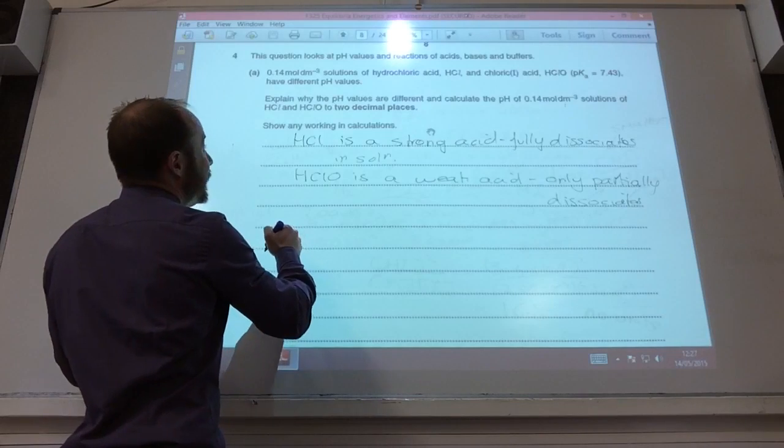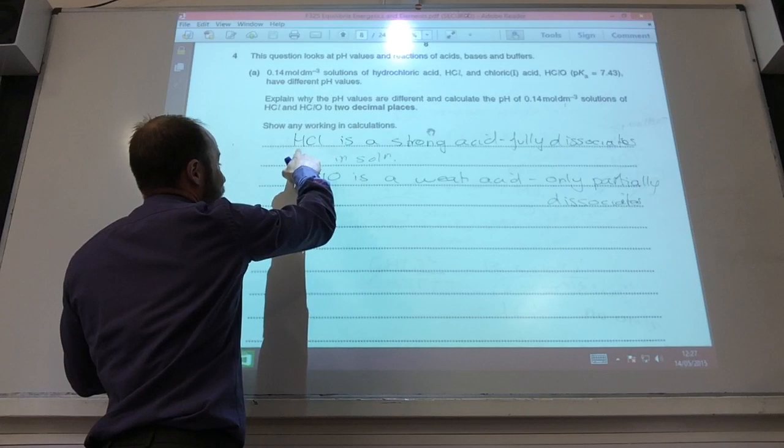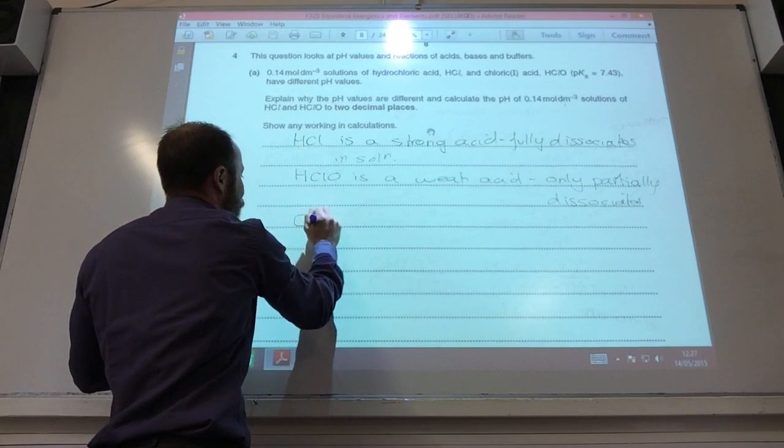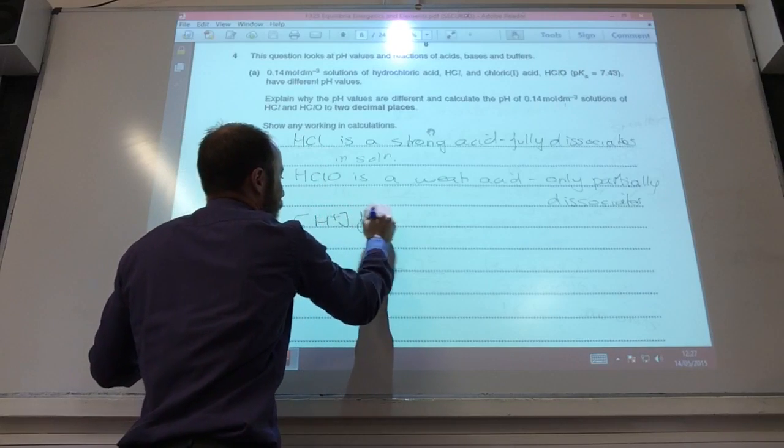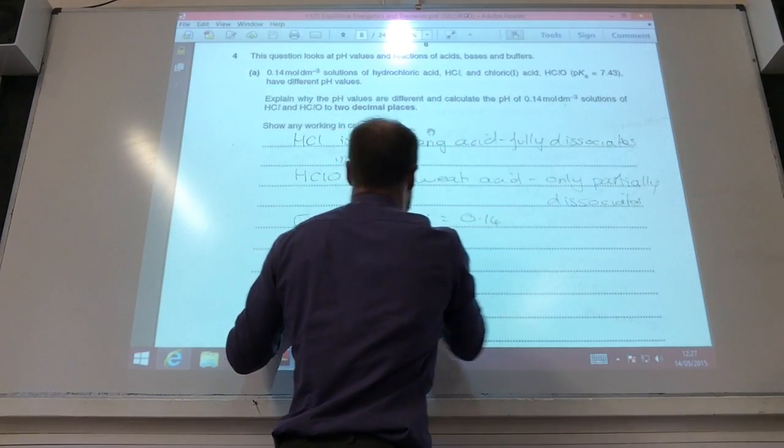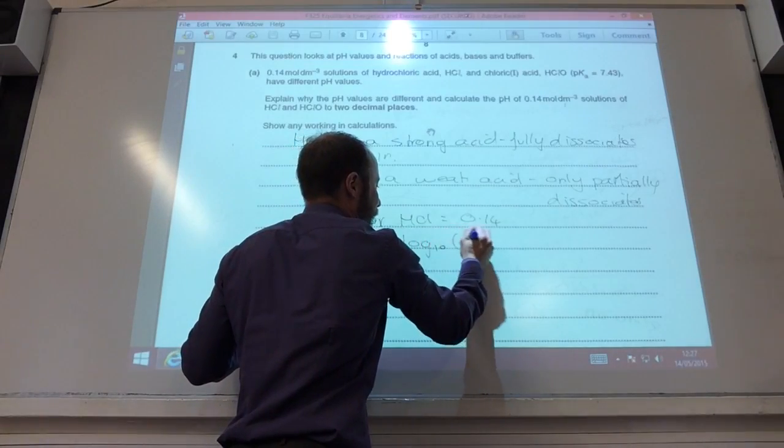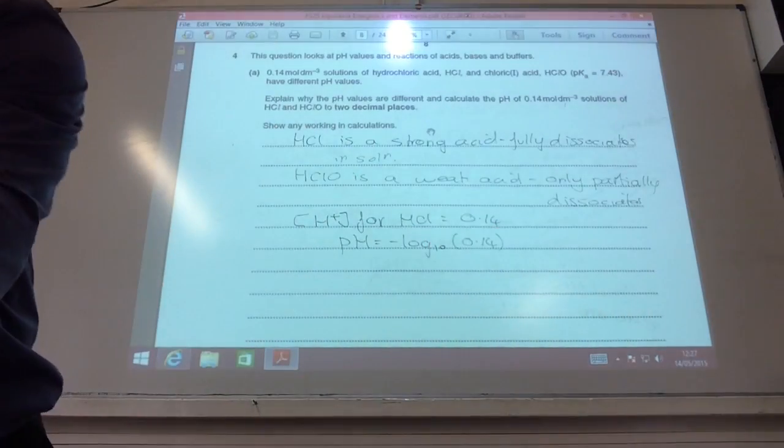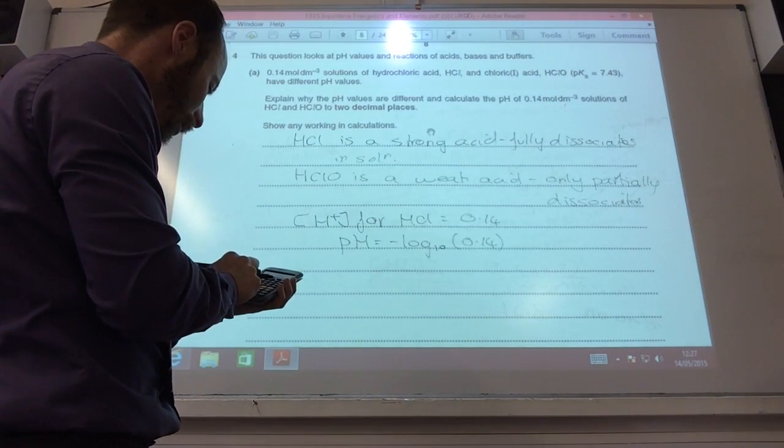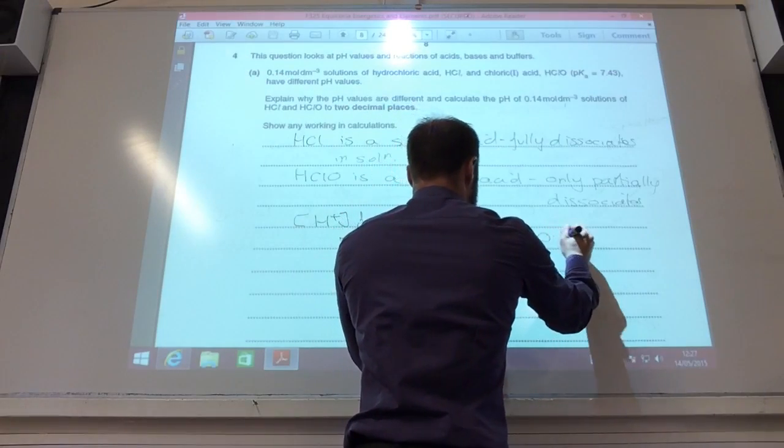For HCl it's dead easy. If that's my concentration of hydrochloric acid, hydrochloric acid just has one hydrogen per HCl. Therefore the concentration of H+ for HCl is going to be the same, that would be 0.14. Therefore the pH is equal to minus log to the base 10 of 0.14. Let's quickly burn that in: log 0.14, change the sign, that equals 0.85.